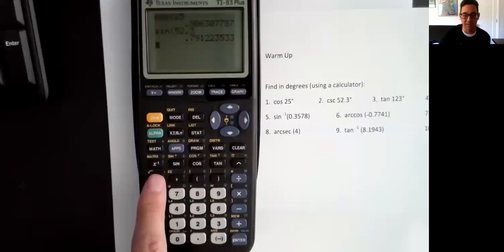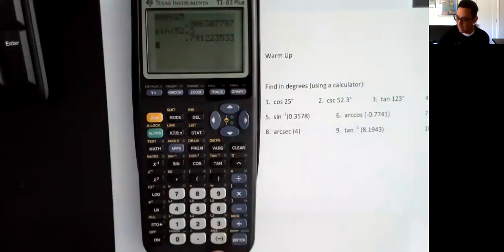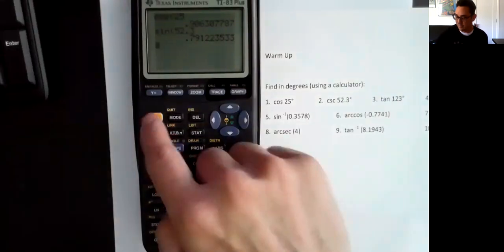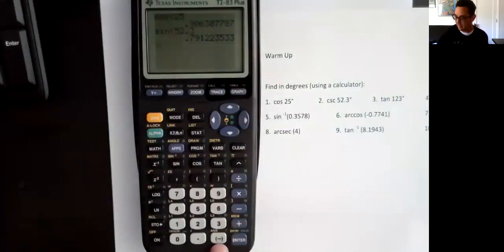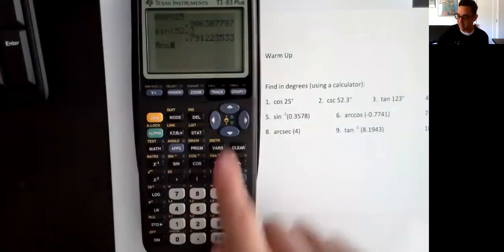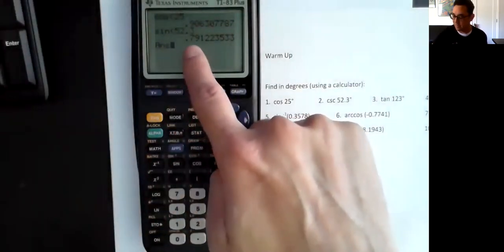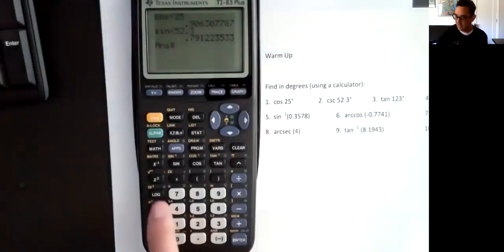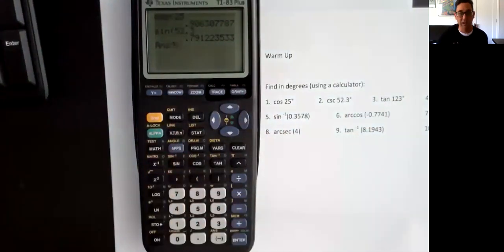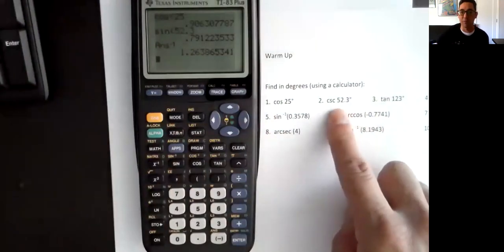Now, on some calculators, the button actually says 1 over x. So mine says x to the negative 1. So I'm going to, now I have to take that answer. To get the answer, A-N-S, I hit second, and then I hit this button here above my thumb. And that means take the answer I just got. So that means A-N-S stands for the answer I just got. So 0.79, blah blah, and take it to the power of negative 1, meaning flip it over. Hit enter, and that is my answer for number 2. That would be the cosecant.